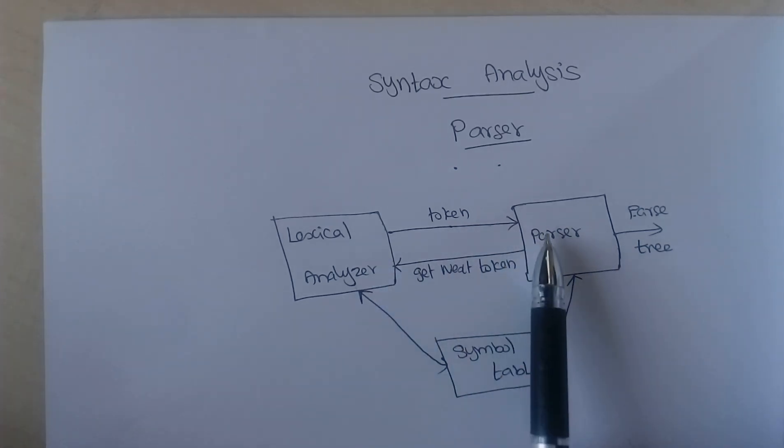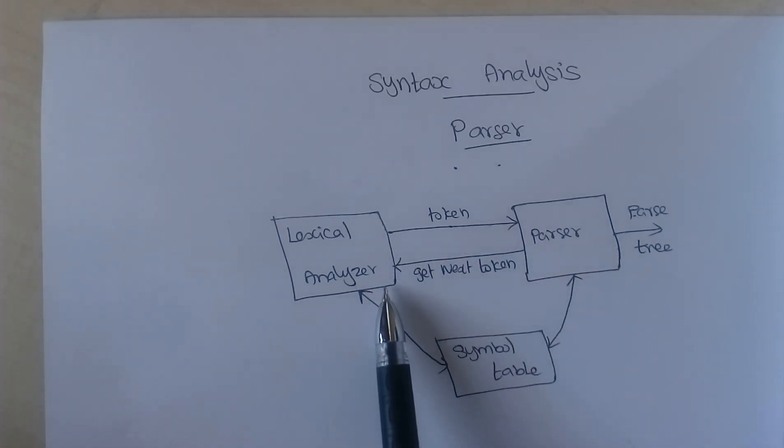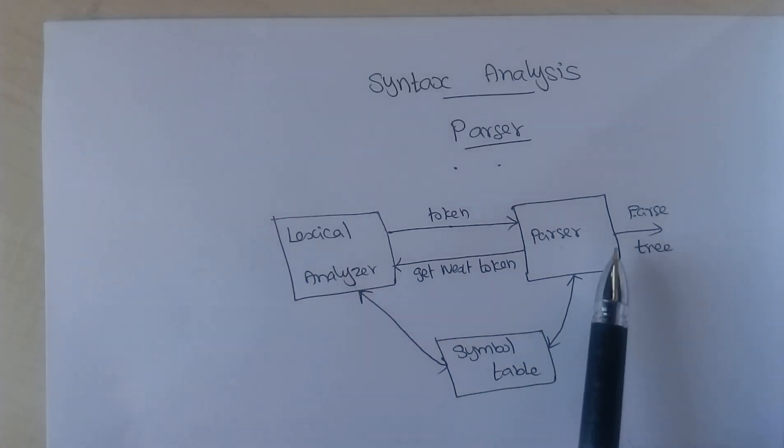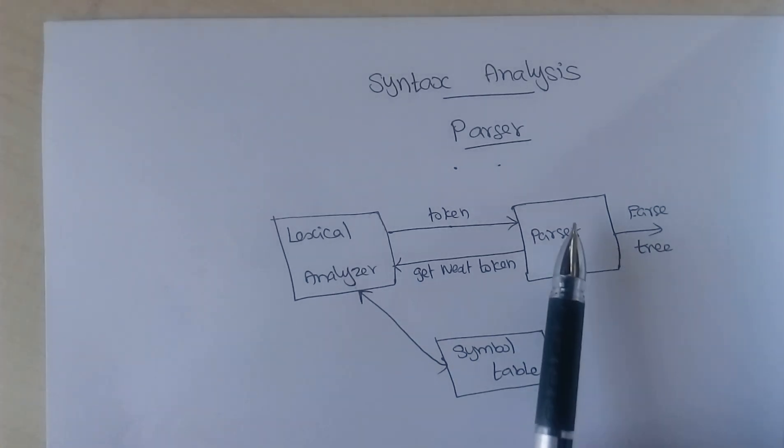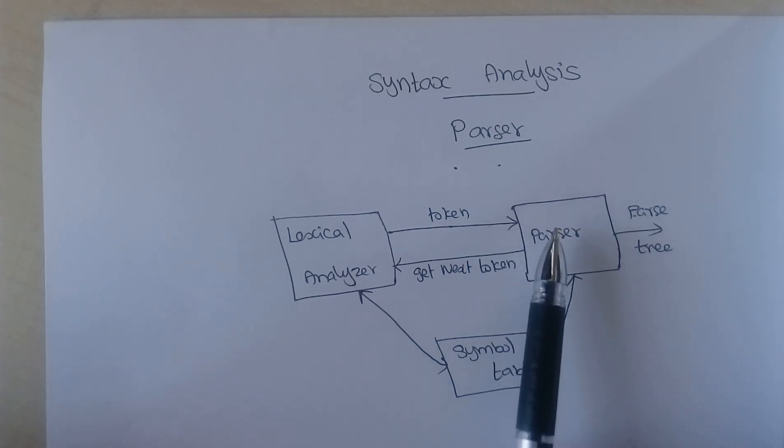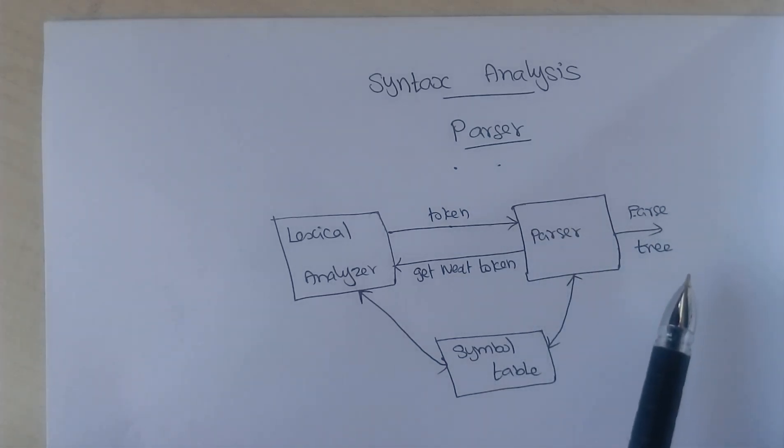So here, each step, the parser will request a token and the lexical analyzer will generate a token. This parser will compare that input string with the existing grammar. And based on the syntactic structure, it will form a parse tree out of it.